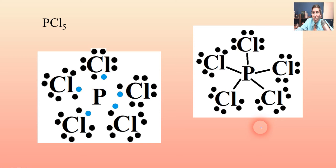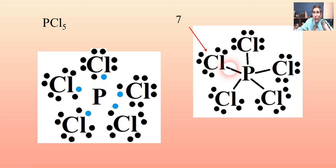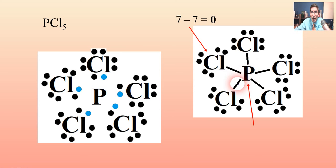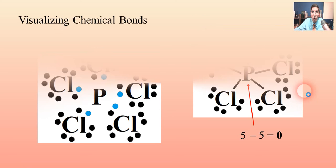Every chlorine has eight electrons, and the phosphorus has more than eight — but there's no way around that. When we check the formal charge: chlorine normally has seven, and counting its six unshared electrons plus the one bond gives seven, so that's zero. Phosphorus normally has five, and subtracting its five bonds gives five minus five equals zero as well.